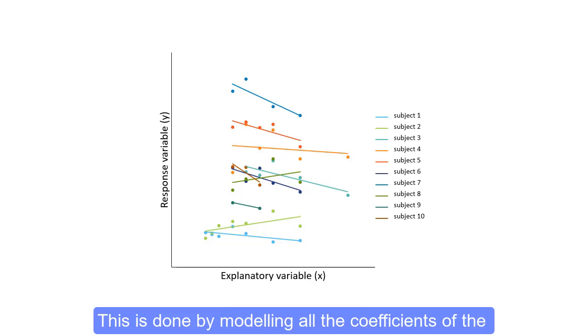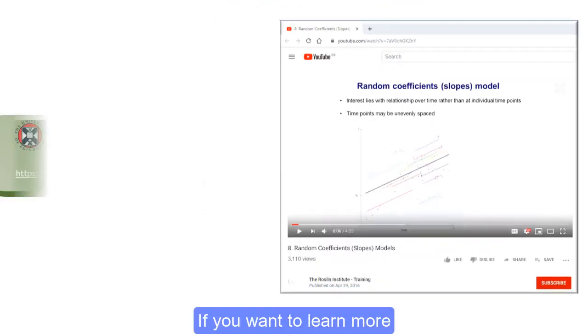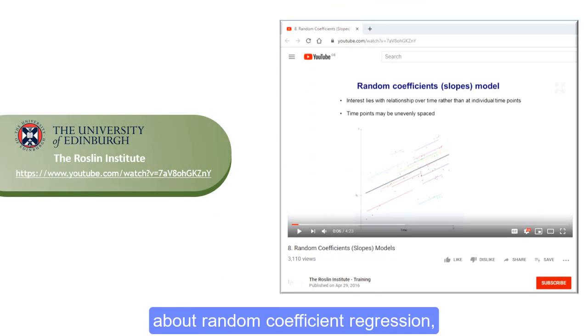This is done by modelling all the coefficients of the regression model for each subject simultaneously using random effects and, importantly, allowing for correlation among these random effects.